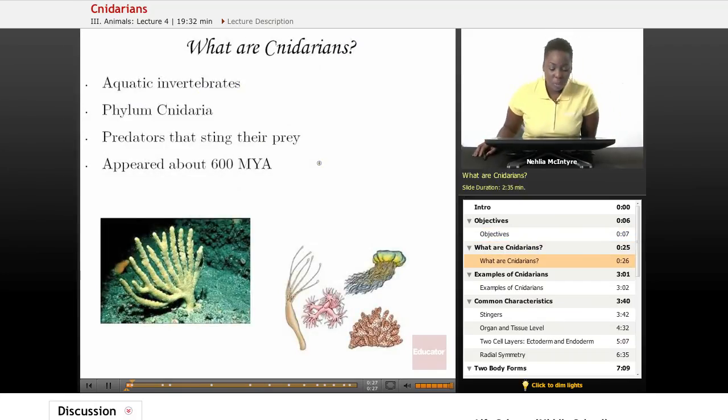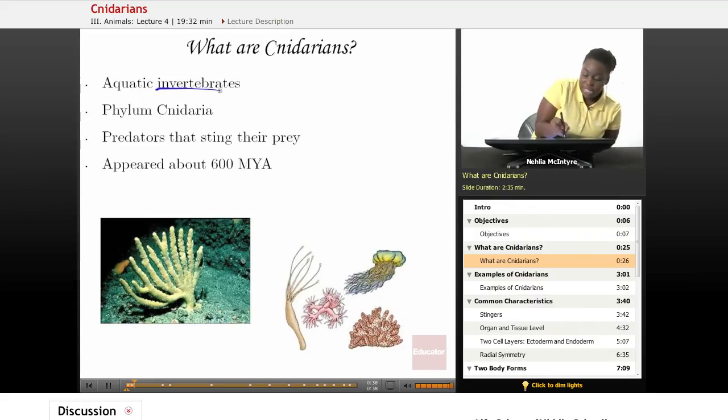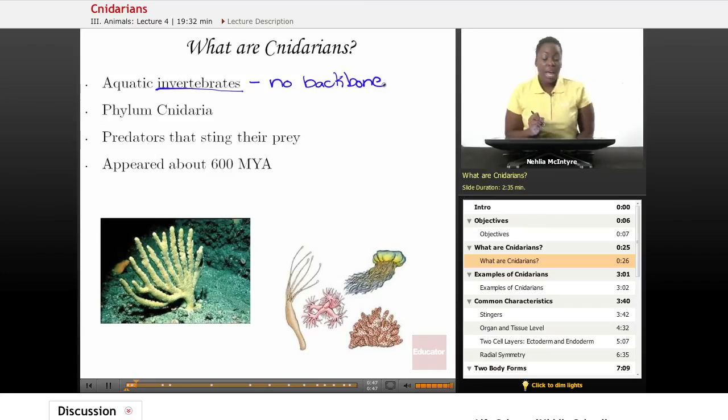Let's start off by asking the question, what are Cnidarians? Well, Cnidarians are animals that live in mostly aquatic and oceanic environments, so they are aquatic invertebrates. And again, invertebrates are animals that have no backbone. Invertebrates evolved before vertebrates evolved, the animals that do have backbones. And Cnidarians belong to the phylum Cnidaria.